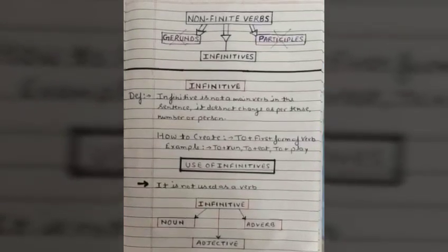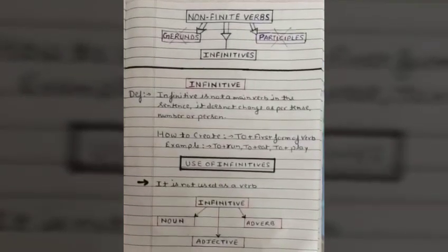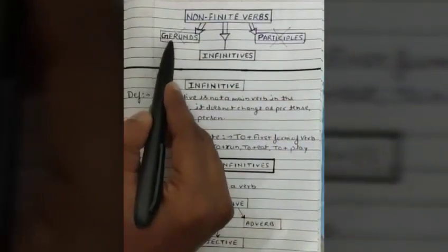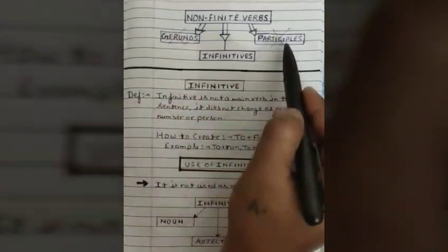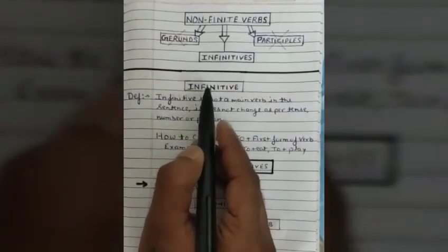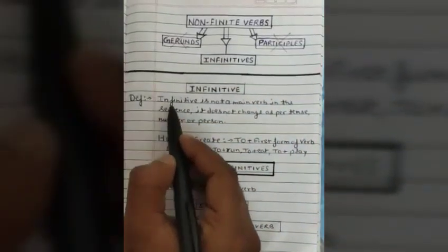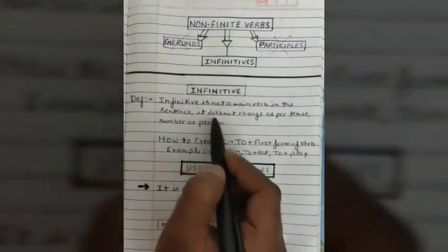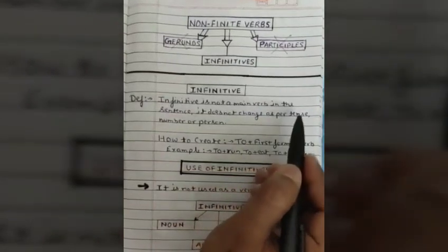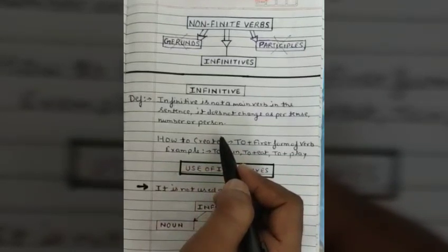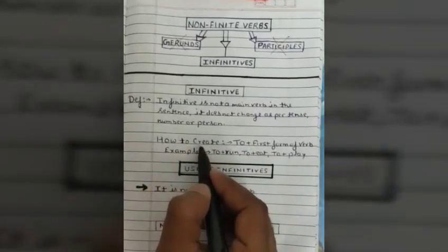As I told you before, in my last two videos I have started non-finite verbs and completed two types: gerunds and participle. Today I am going to teach you infinitives. What is infinitive? I have written the definition here. Infinitive is not a main verb in the sentence. It does not change as per tense, number, or person.